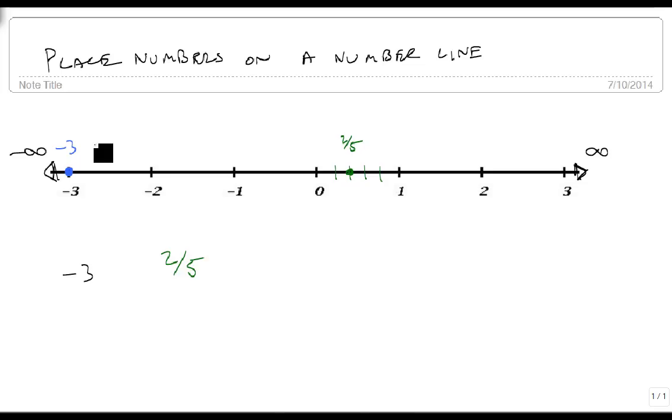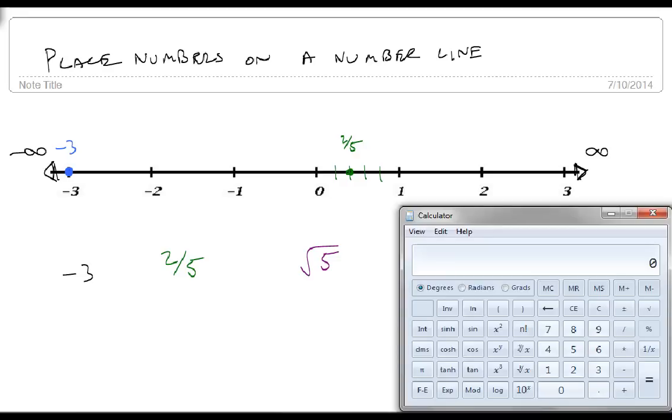Well, sometimes we get numbers that are in radical form, like the square root of 5. And so if we bring up a calculator, for reasons that I'll get into later, we can do 5 to the 1 half power. That's how we take a square root on this particular computer-embedded calculator.